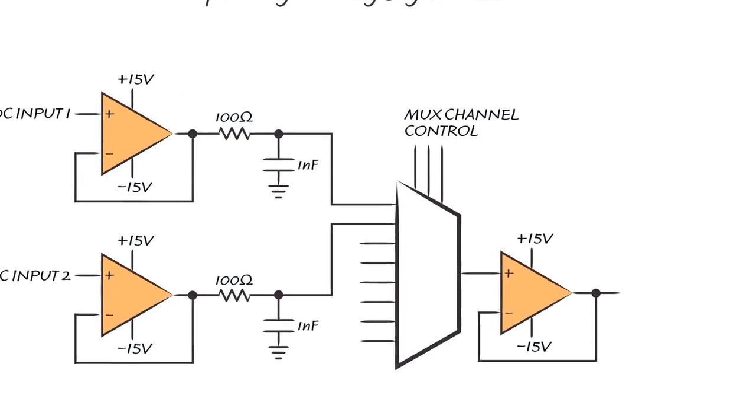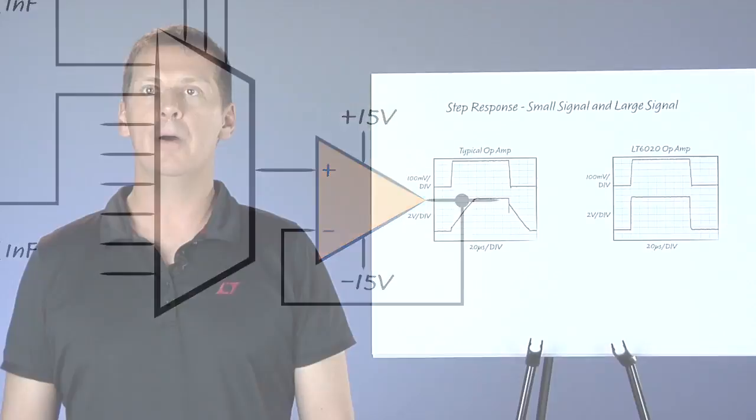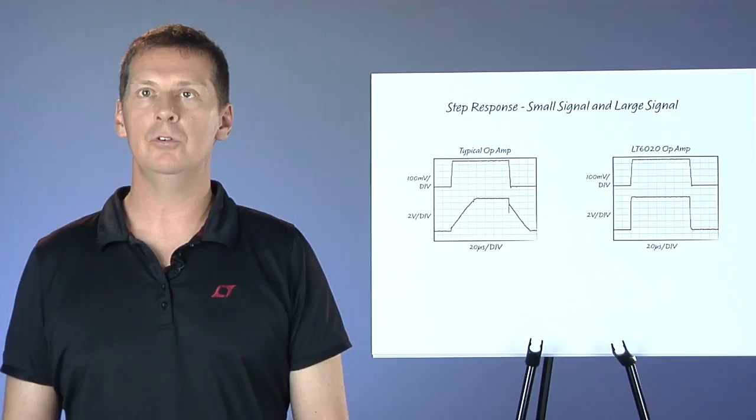Because the switches inside the MUXs have non-zero-on resistance, it is often necessary to buffer the output using an op-amp. Now let's talk about how to choose which op-amp to use in this spot.